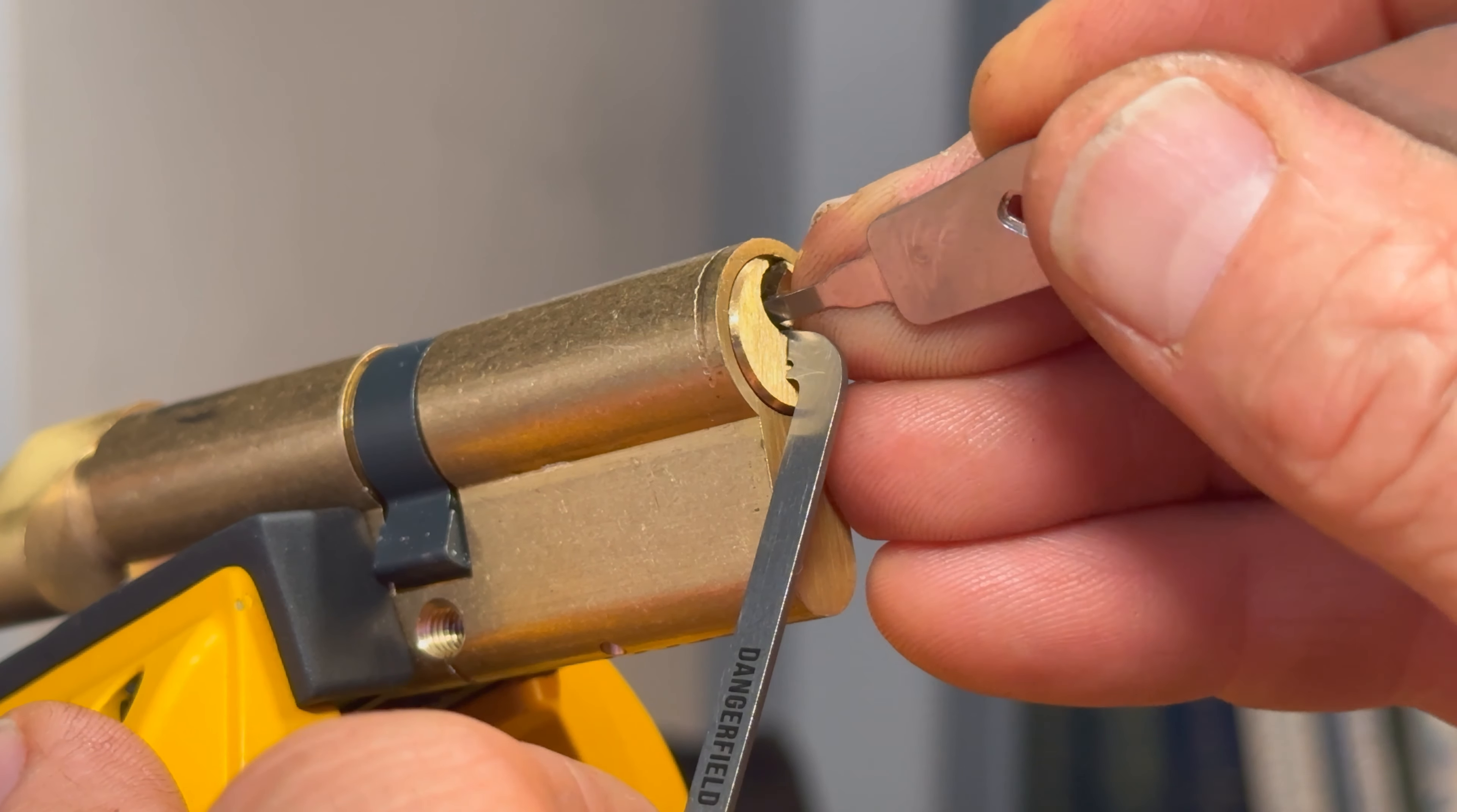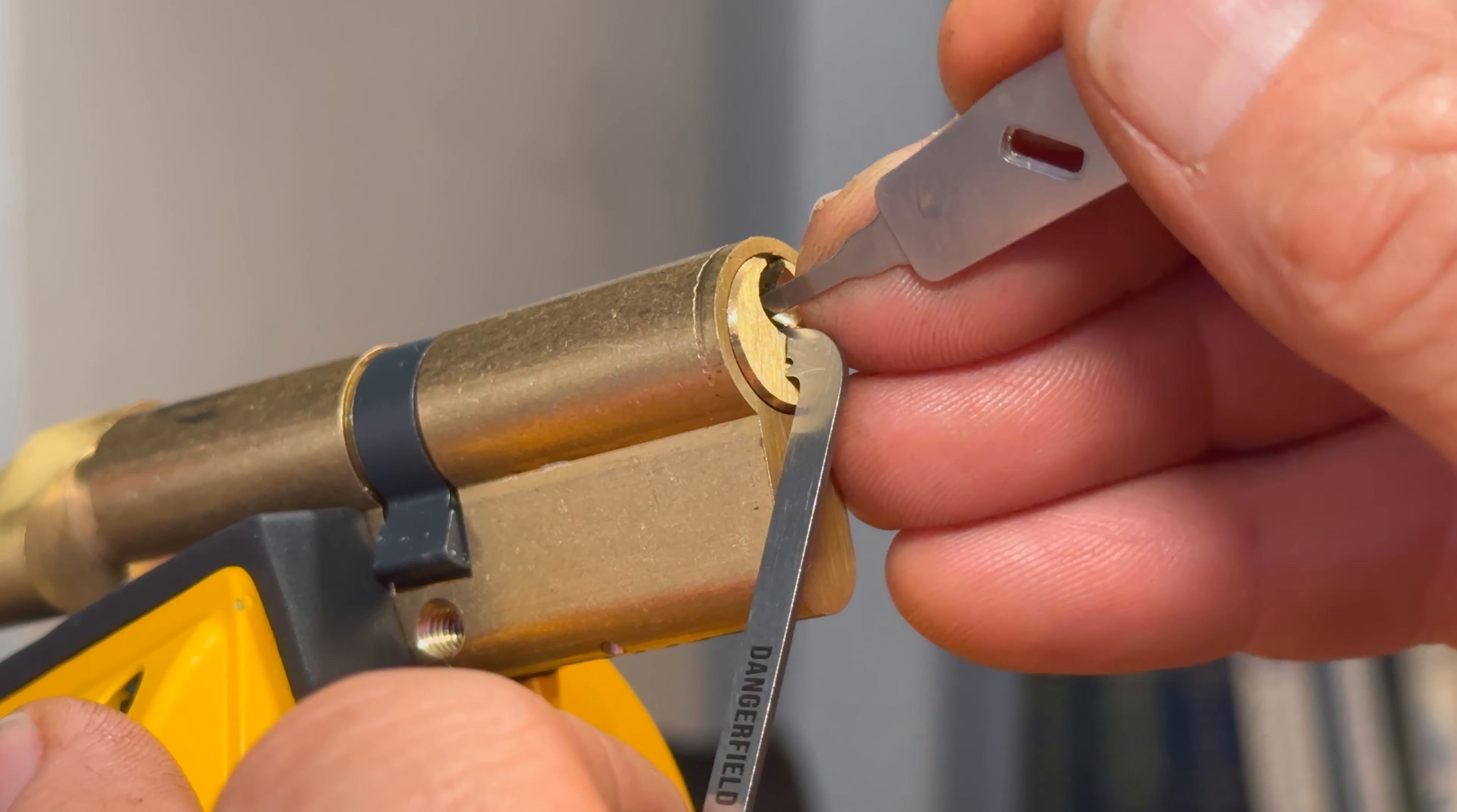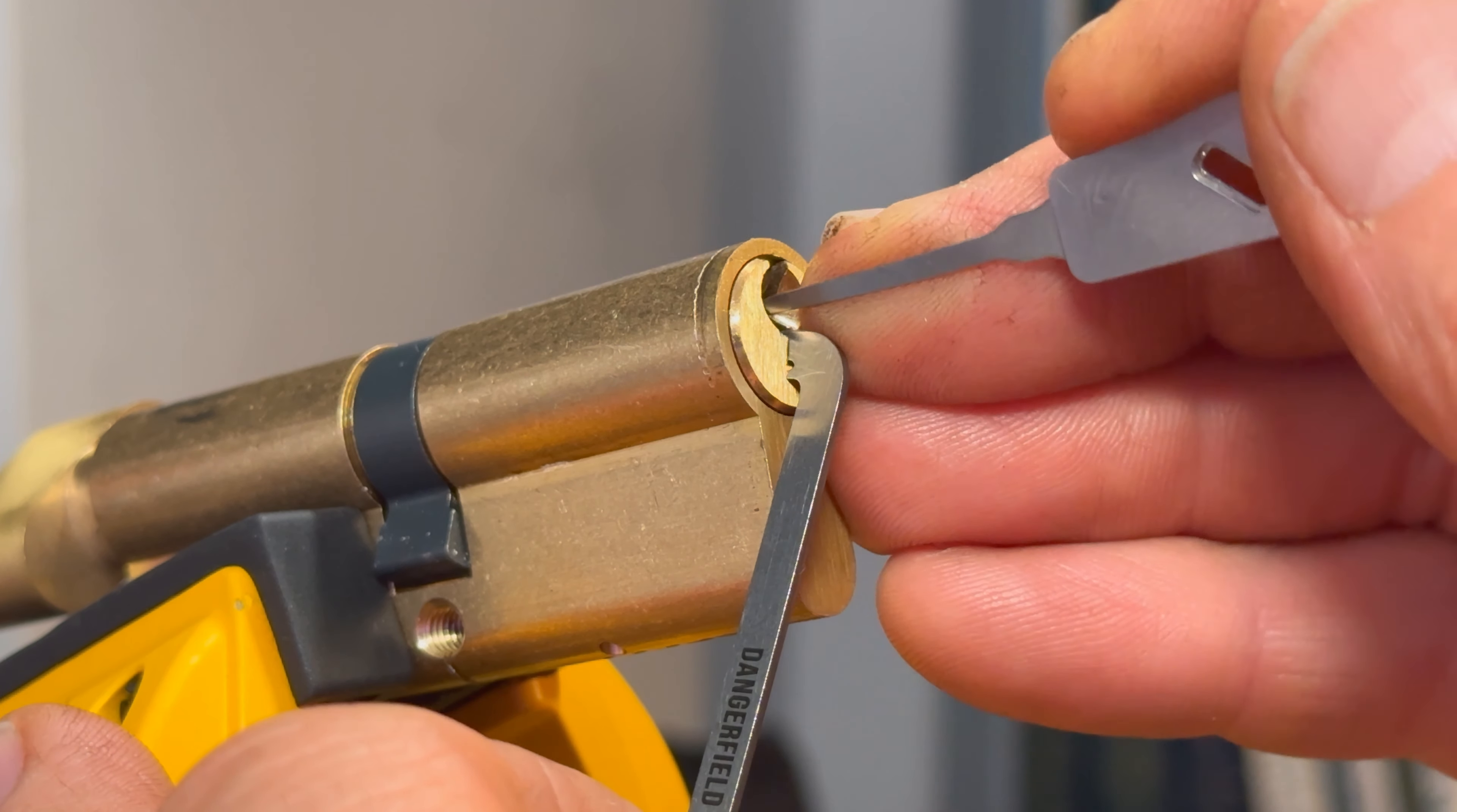Go to the back of the lock. Pin six. Not giving me anything at the moment. I can hear my dog snoring in the background. Let's go back to the front of the lock. See where we're at. Pin two is high. Let's set pin two.